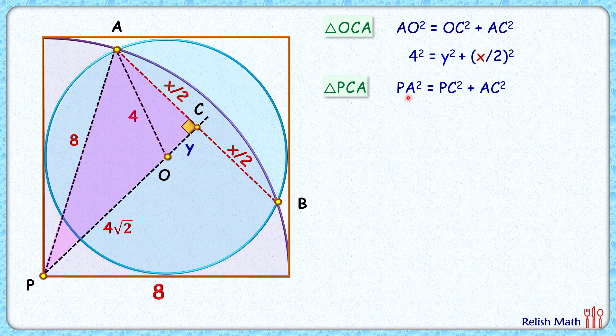So putting the values here: PA is 8, PC is 4√2 + Y, and AC length is X/2.